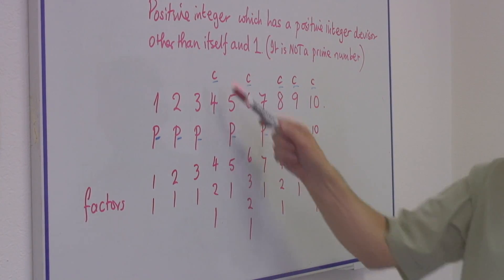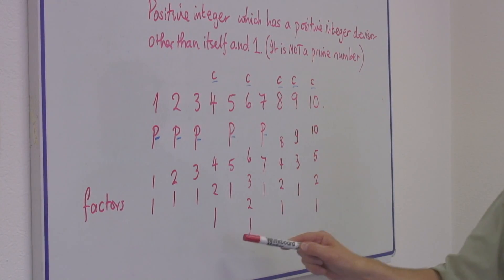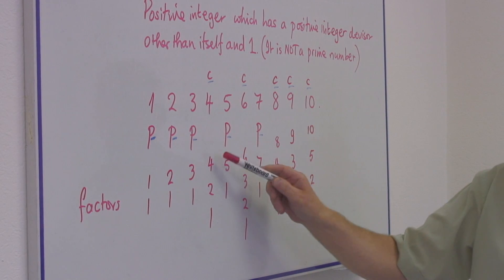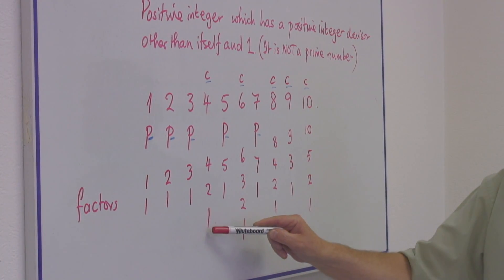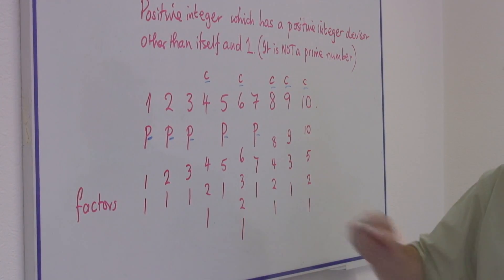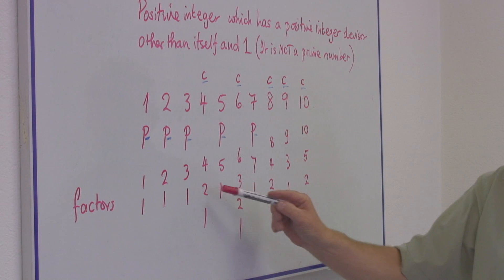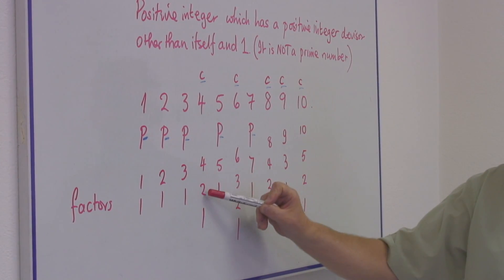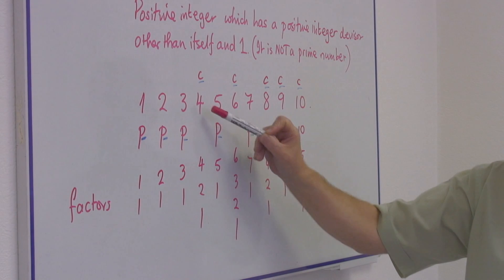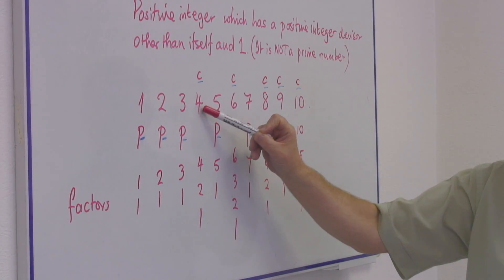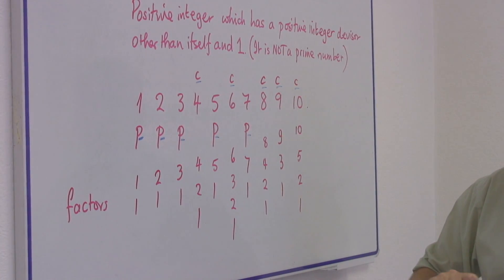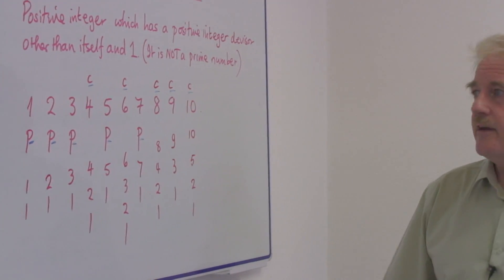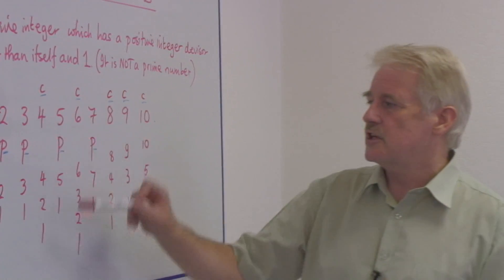But the number four is different — it's composite, because it has four and one as two of its factors, but it also has two as a factor. So it has a whole number which when divided into the number gives you another whole number: two times two is four. And therefore that is a composite number.